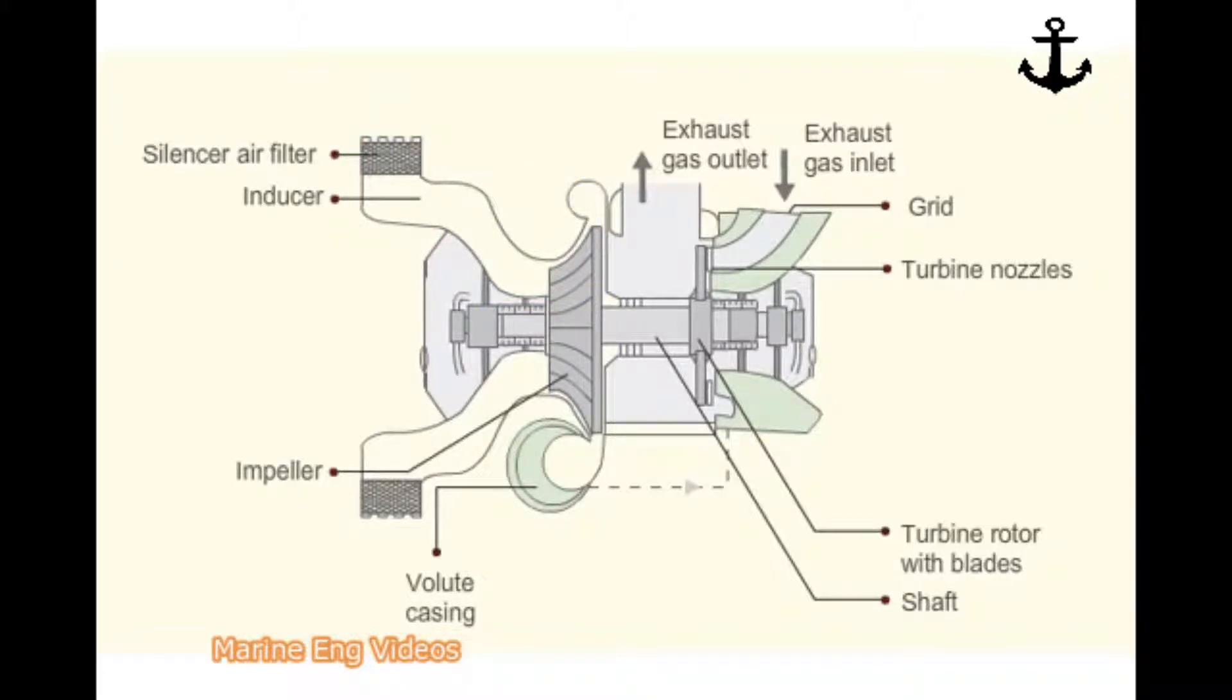Impeller discharges the air radially through diffuser and volute casing to the air cooler. The diffuser and volute casing have divergent shape which reduce the speed of air passing through them. This reduction in speed converts kinetic energy into pressure energy.